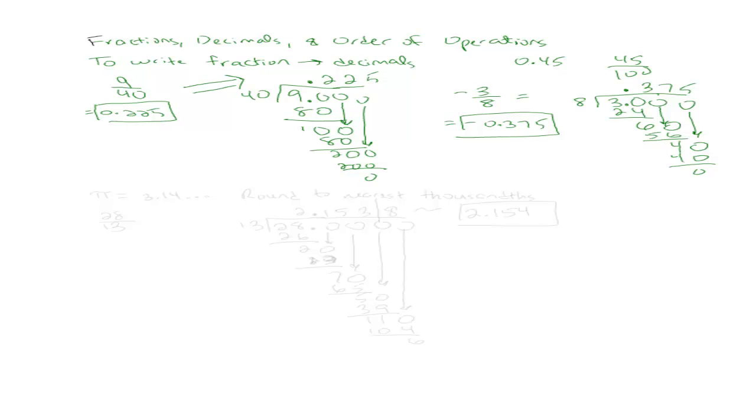Sometimes it's not gonna be so simple. We've learned that there are decimals that never finish. For example, pi is one of those decimals that never finish. Pi will keep on going forever. You approximate it to be 3.14, but it actually keeps on going forever. So let's talk about what happens when we have decimals that go on forever, like 28 over 13. Most of the time, you'll be asked to round it to some place. In this class, we're gonna round to the nearest thousandths.